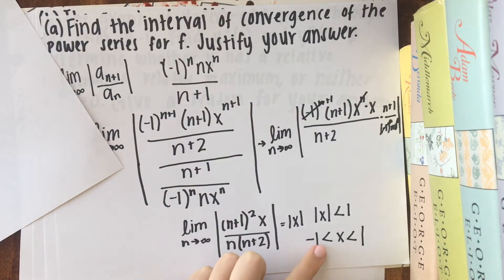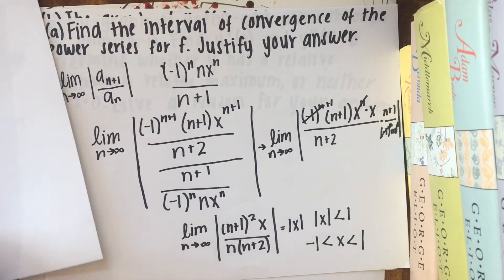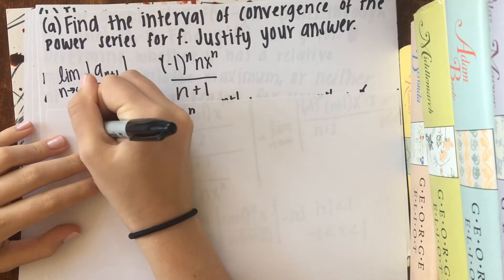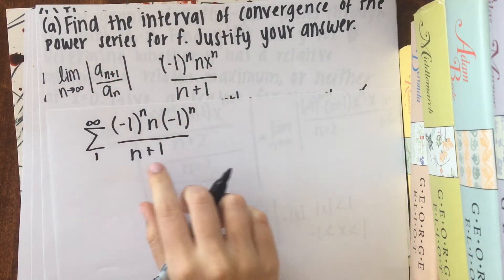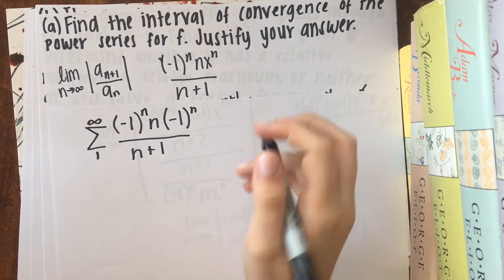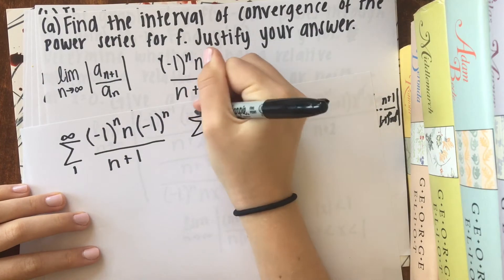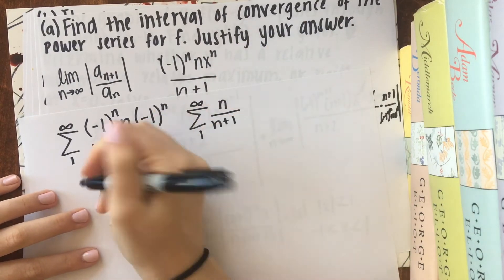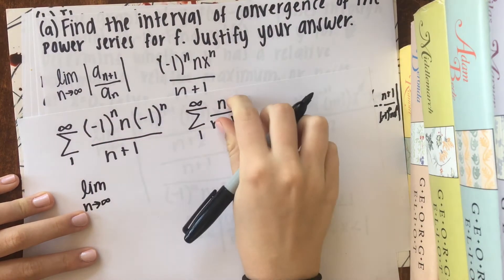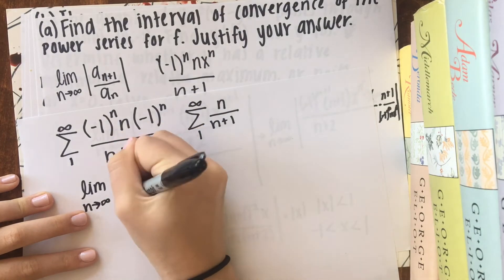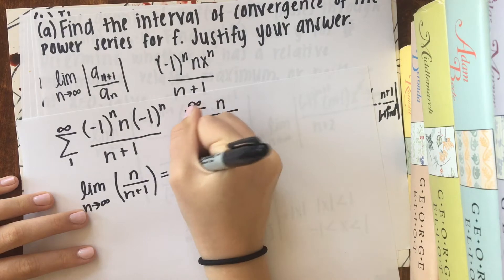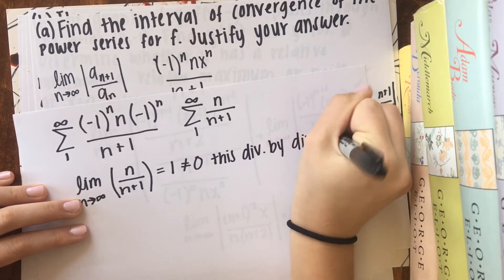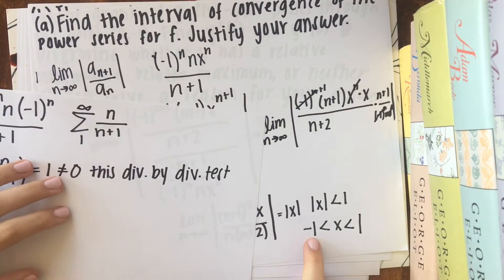And we're not done yet here because we still have to test these endpoints and of course justify the answer. So now I'm going to plug negative 1 in for x. And so we know that the series from 1 to infinity is that. And now we can just test whether or not this converges or diverges. And what we are going to end up with is 1n over n plus 1. And the limit as n approaches infinity of this sequence here equals 1, which does not equal 0 obviously. So this diverges by the divergence test. And so we know that this endpoint is not included.